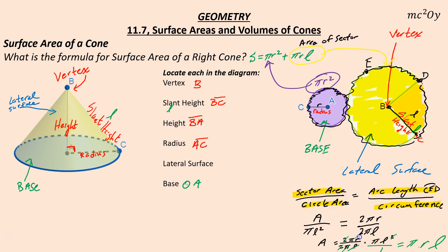So there we go — the surface area of a cone is πrL added to the area of the circle πr², and that gives us the surface area of the entire cone.